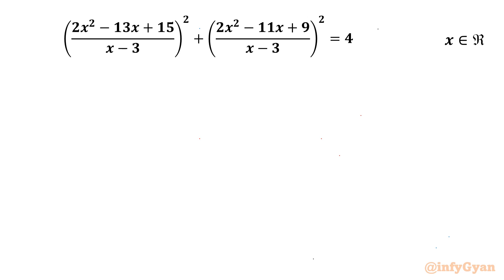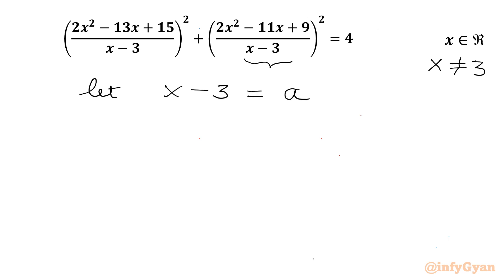Let us get started by noting that x cannot be equal to 3, since the denominator cannot be 0. Now I will consider the substitution: let x - 3 = a. So in place of x I will be writing a + 3 in the numerator.